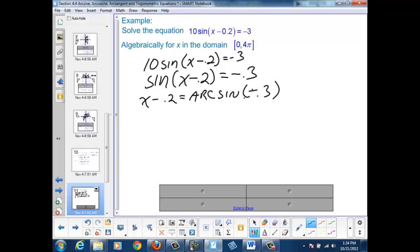Here I'm going to replace the arcsine with its definition, which means I need to split this problem into two parts: the original inverse sine and the supplementary solution. So part one would be x - 0.2 = sin⁻¹(-0.3) + 2πn.